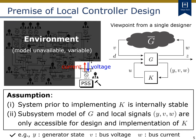Next, we explain the premise of local controller design. A control problem is formulated from a viewpoint of a single controller designer. For example, the local subsystem for this designer is a generator, and the remaining part of the system is considered as an unknown environment connected to this generator. A block diagram of this system can be drawn like this. Here, G denotes the local subsystem, G-bar denotes the unknown environment, and K denotes a local controller to be designed.